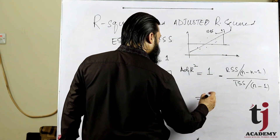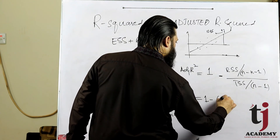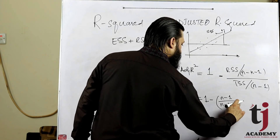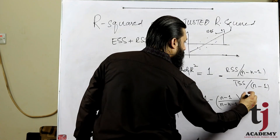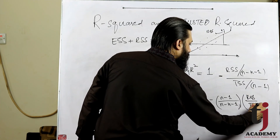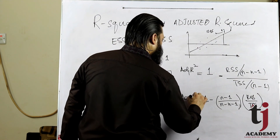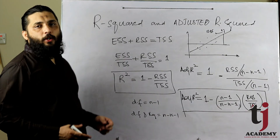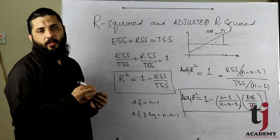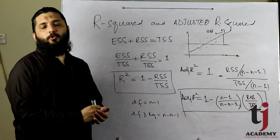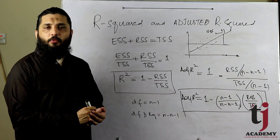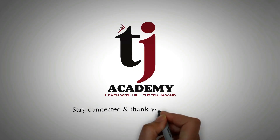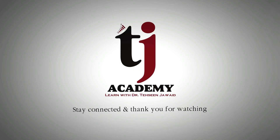مزید simplify کریں تو: Adjusted R² = 1 minus [(n-1)/(n-k-1)] × (RSS/TSS)۔ یہ آپ کے پاس adjusted R² کا formula ہے۔ I hope R², adjusted R²، اور degree of freedom تینوں کا concept سمجھ آ گیا ہوگا۔ اگر یہ video پسند آئے تو like کریں، share کریں، channel کو subscribe کریں اور bell icon پر ضرور click کریں۔